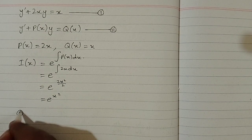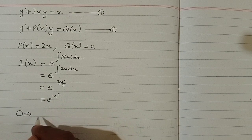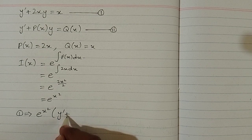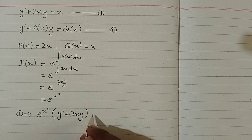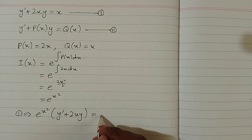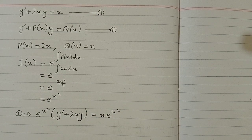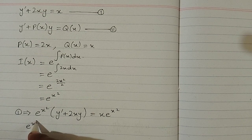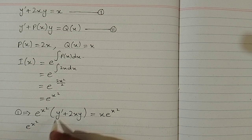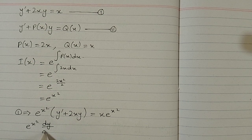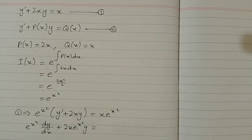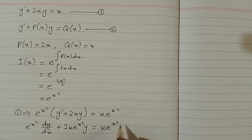Now we multiply both sides of equation 1 by e^(x²). So we have e^(x²) multiplied by (y' + 2xy) = x·e^(x²). This can be written as e^(x²)·(dy/dx) + 2x·e^(x²)·y = x·e^(x²).